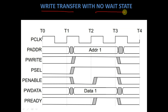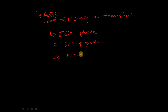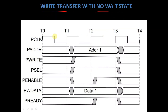Let us see a write transfer with no wait state. Before going into this, the first phase is called the idle phase, the second one is called the setup phase, and the third is called the access phase. These are the three phases associated with APB during a transfer. The write operation is taking place from the bridge to the APB interface, from requestor to completer.